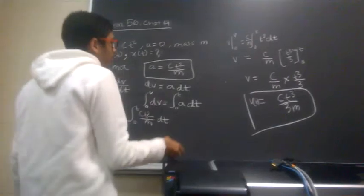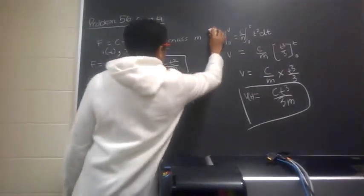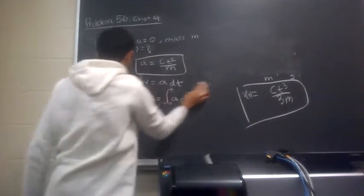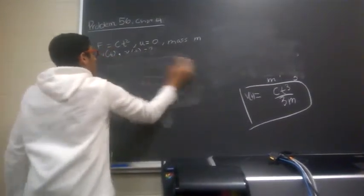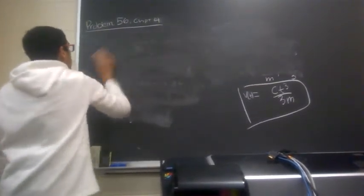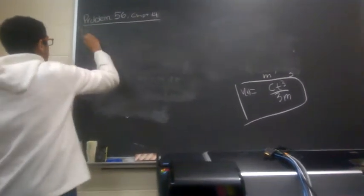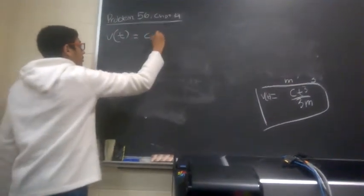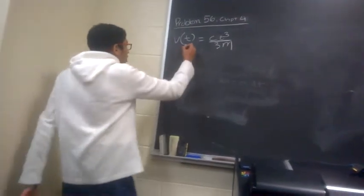Now, for the second part, I'll just save the answer for v, and I'll just erase the rest of this stuff. So now we have to find x as a function of t, for the second part.